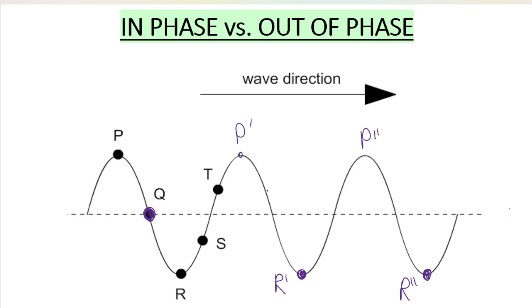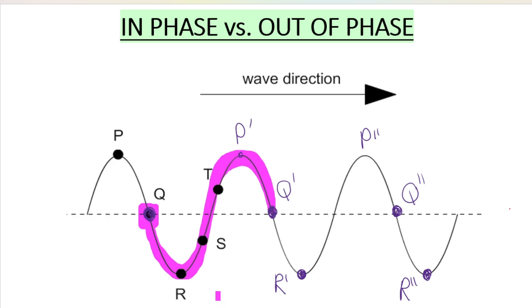So to get the next Q, we'd have to go up to the crest and then back down to the equilibrium position — that would be the next Q in phase. Then the third Q: up to the crest and back down to the equilibrium position — that's the next point in phase. So to get one wavelength starting at Q, you go from Q to the next point in phase. That's one wavelength. A second wave would start at Q, go up to the crest and back down to the equilibrium position.